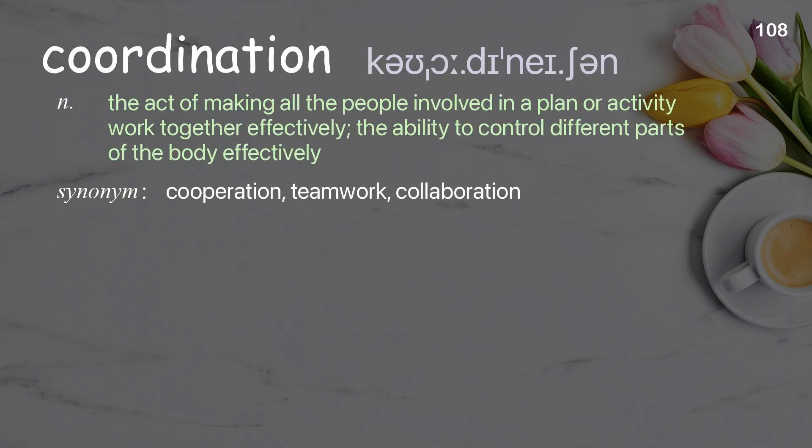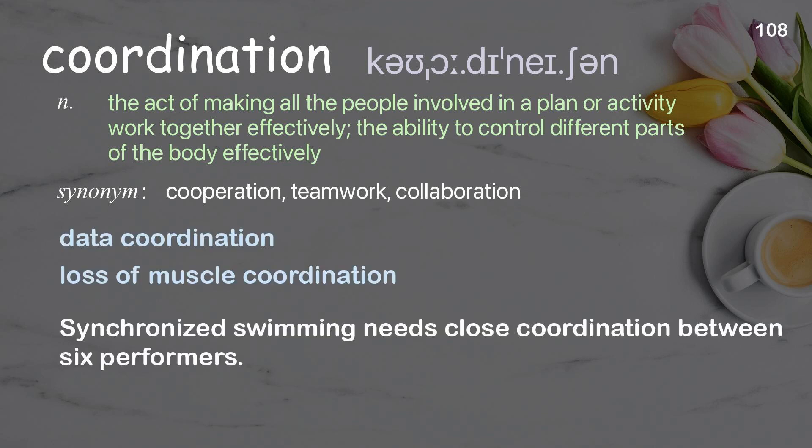Coordination: the act of making all the people involved in a plan or activity work together effectively; the ability to control different parts of the body effectively. Examples: data coordination, loss of muscle coordination. Synchronized swimming needs close coordination between six performers.